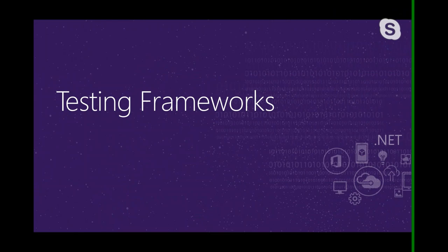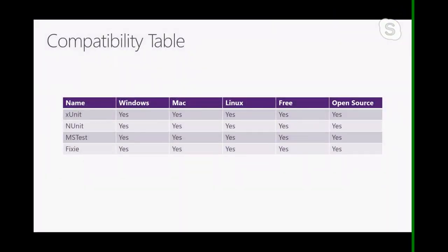To get started we're going to talk about testing frameworks. Everyone knows about testing frameworks — they're a bunch of different tools in one, but the primary use case is to run and write unit tests. They provide facilities from test runners to assertion frameworks out of the box. The most popular testing tools in the .NET ecosystem are xUnit, NUnit, MSTest, and Fixie — and pretty much all of them are cross-platform, free, and open source.